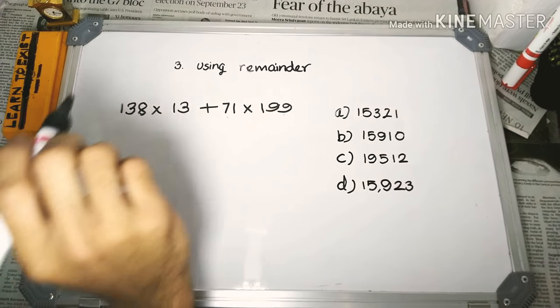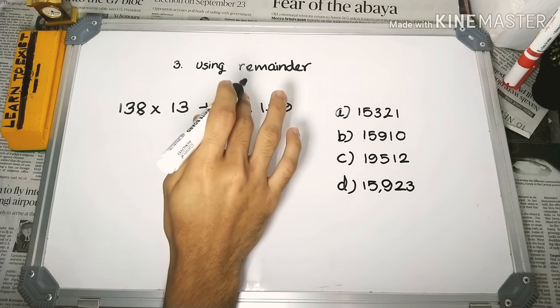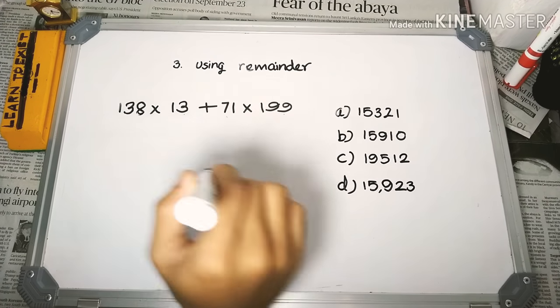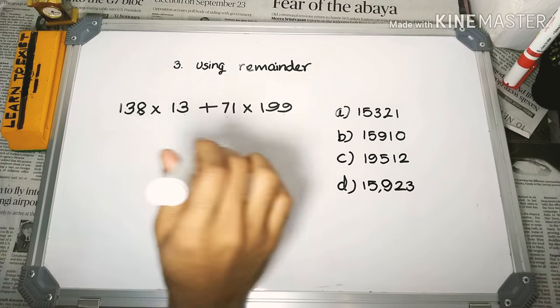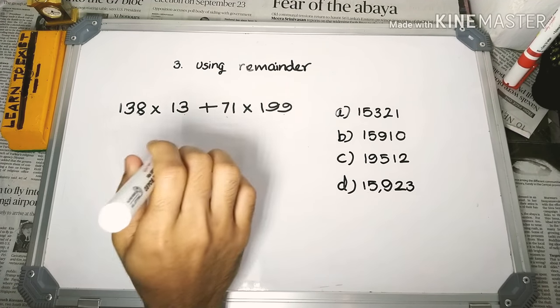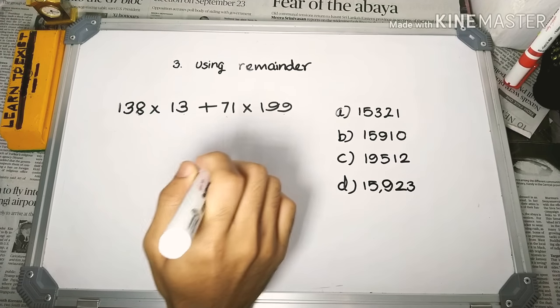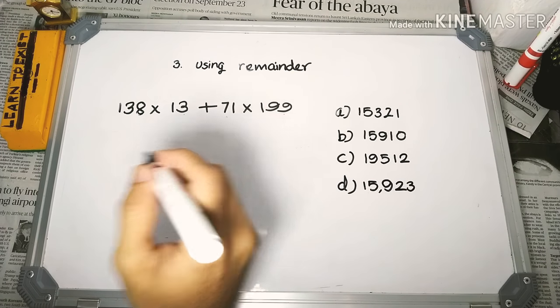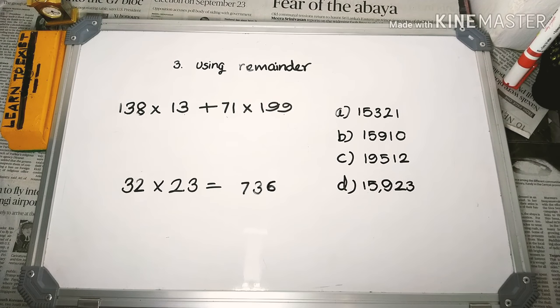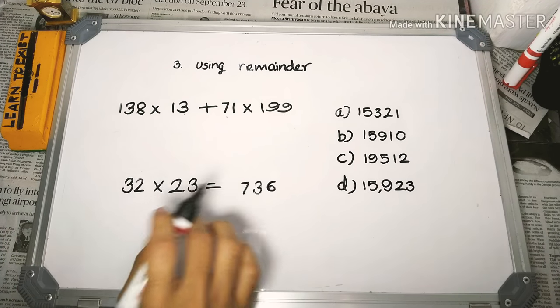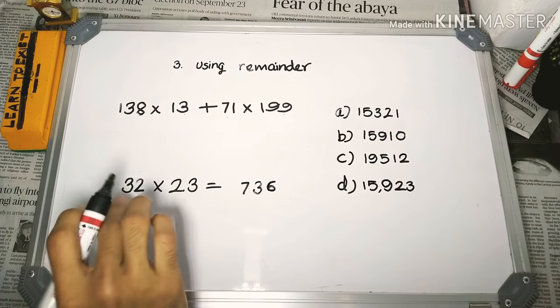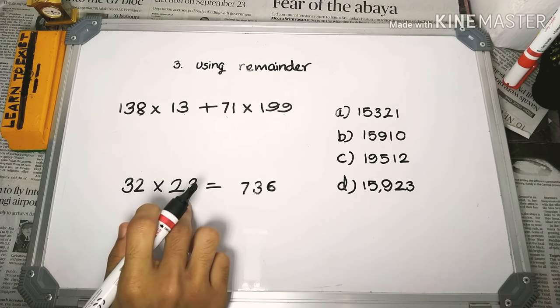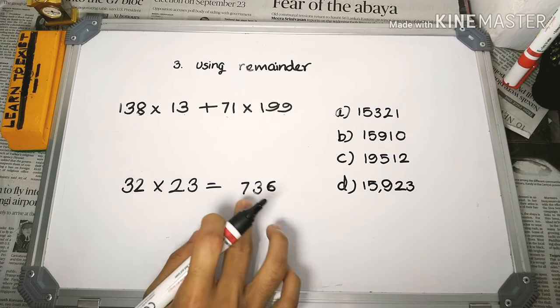In this class, we call this the Remainder method. Basically, we will use the Remainder 9 concept. For example: 32 × 23 = 736.